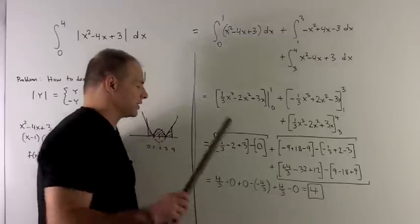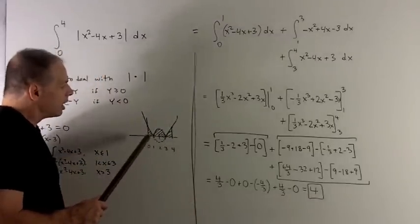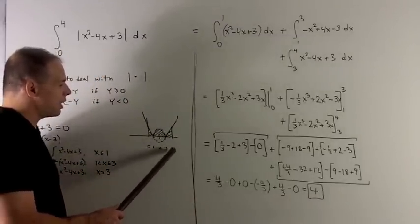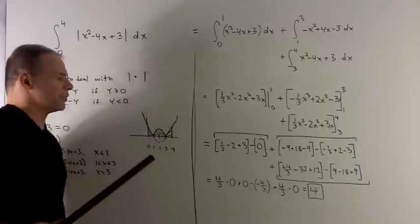The interpretation of this is, if I take the area under this curve here from 0 to 4, that area is going to add up to 4.